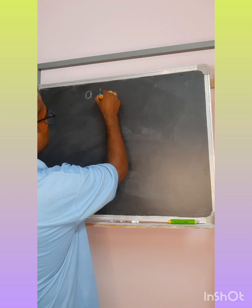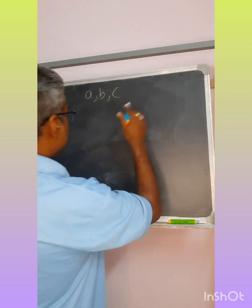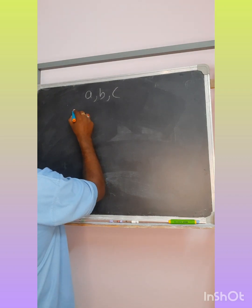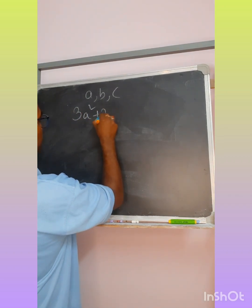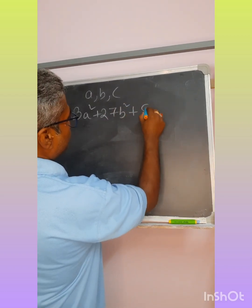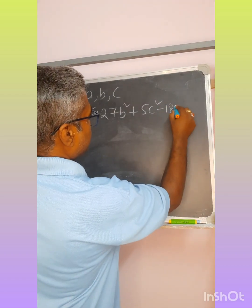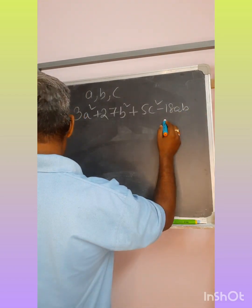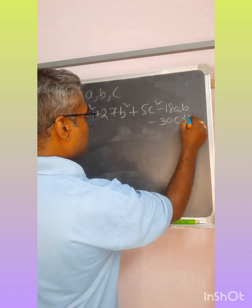A, B, C is a member of that expression. The expression is equal to 3A² + 27B² + 5C² - 18AB - 30C + 100.